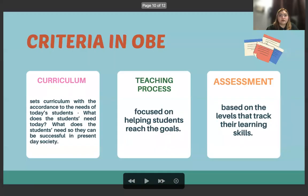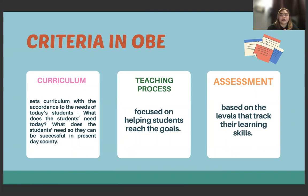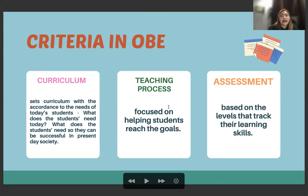OBE has three criteria: curriculum, teaching process, and assessment. Curriculum sets the content in accordance with the needs of today's students — for example, engineering students might be given an activity to create or invent something useful in the future. The teaching process focuses on helping students reach their goals. Assessment is based on levels that track students' learning skills.